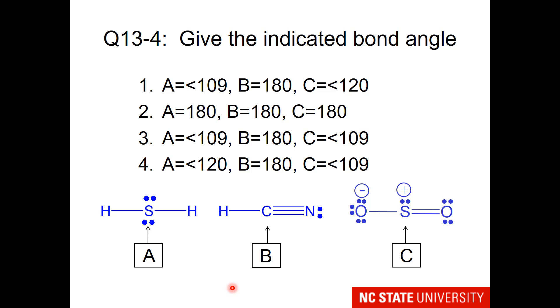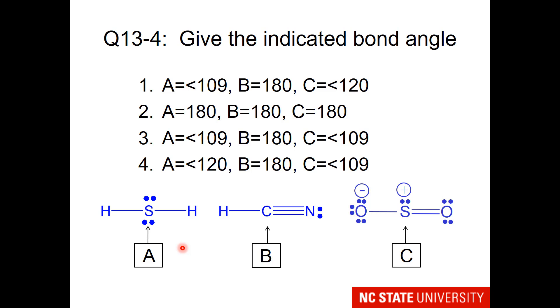So here are what I hope are three compounds that you have already counted electron regions for. This time now, please give the indicated bond angle. So for A, I am requesting the hydrogen-sulfur-hydrogen bond angle. Certainly, it looks like 180 on this screen, but you know better now. And I am also asking for the shape about the central atom. So please consult your notes and come up with an answer.